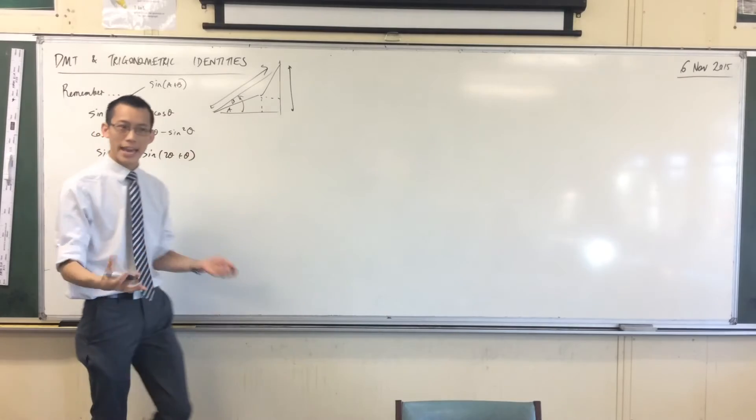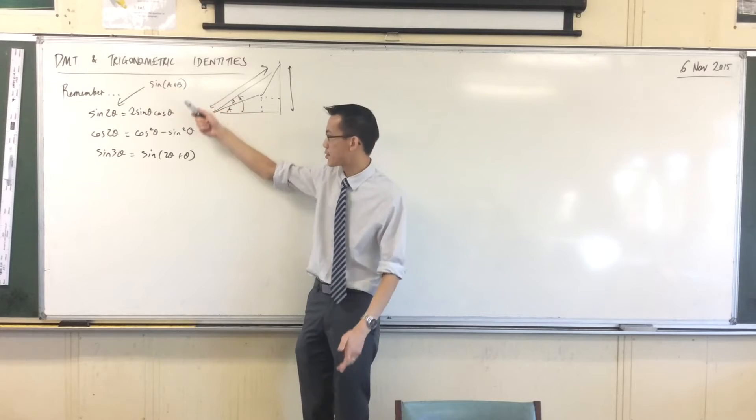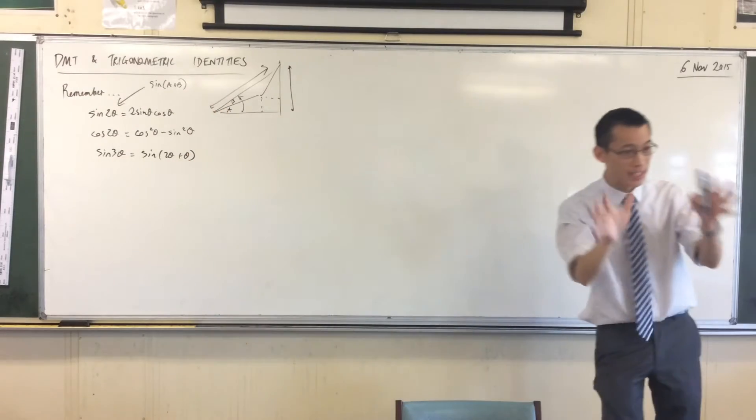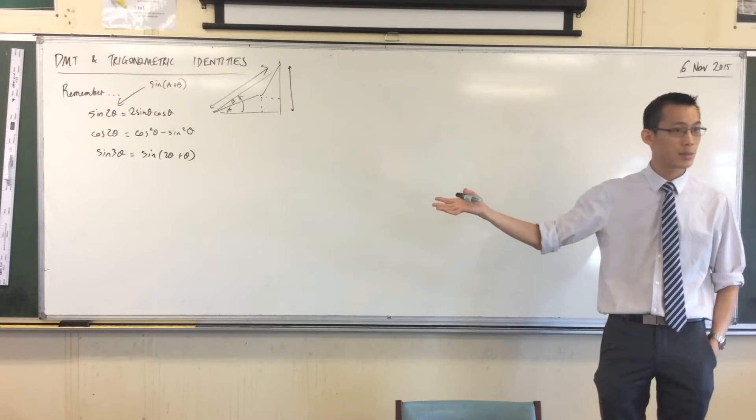So, this is just, again, another instance of this guy, right, except my a and b are two theta and theta, and then you can kind of sift it down from there, and there's no problem with that, okay? You can actually get this result.